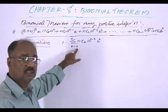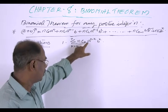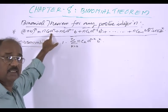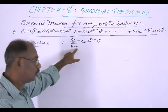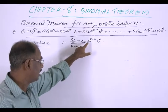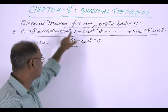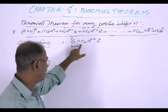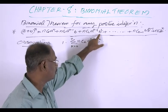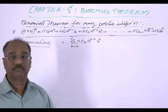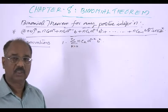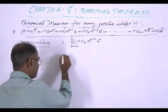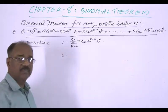When k = 0, we get nC0 * a^(n-0) * b^0, which is nC0 * a^n — the first term. When k = 1, we get nC1 * a^(n-1) * b^1, which is the second term. When k = 2, we get nC2 * a^(n-2) * b^2, the third term, and so on. So we can write the expansion in this sigma form.